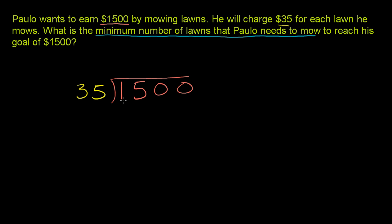35 does not go into 1, so we have to add another digit. 35 does not go into 15. 35 goes into 150. Well, 30 goes into 150 five times. 35 is bigger, so it won't go into it 5 times. Let's try 4. 4 times 5 is 20, carry the 2. 4 times 3 is 12, plus 2 is 14.